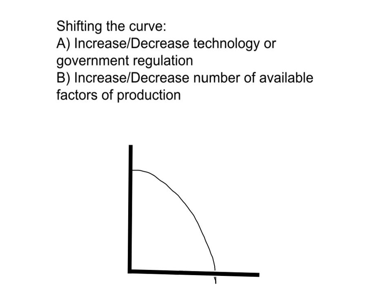There are really two ways we can shift the curve. If we shift the curve outward, showing an increase in technology or an increase of the number of available factors of production. For example, if we have a large influx of immigrants coming in and our population grows, we become more able to produce, so we shift the curve outward.